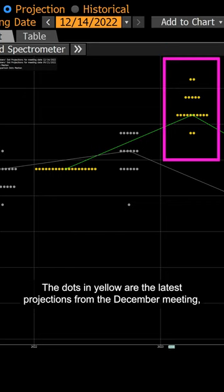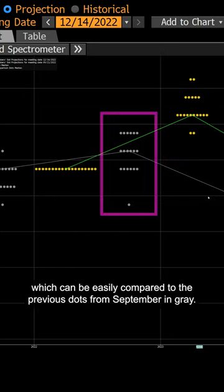The dots in yellow are the latest projections from the December meeting, which can be easily compared to the previous dots from September in grey.